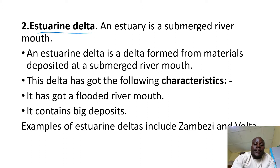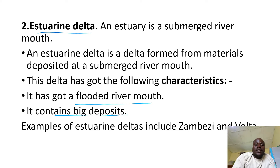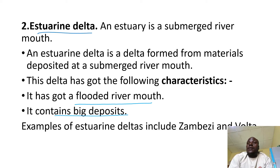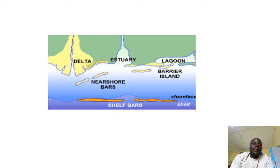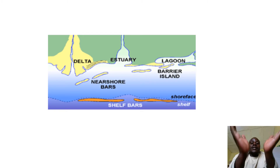Characteristics of this delta: it has a flooded river mouth, just like an estuary. It contains big deposits. Examples include the Zambezi and Volta deltas — Zambezi on river Zambezi and Volta on river Volta. Its appearance is like a sea level rise feature. Formerly, the river was entering the sea and its mouth was submerged, forming an estuarine delta.